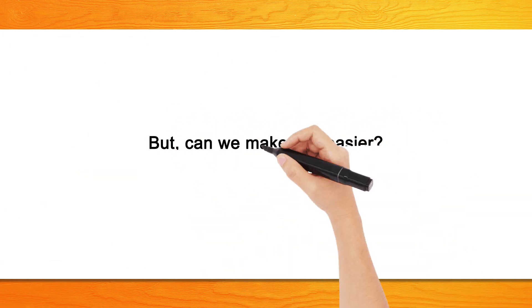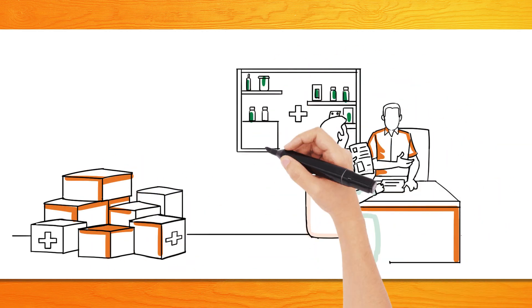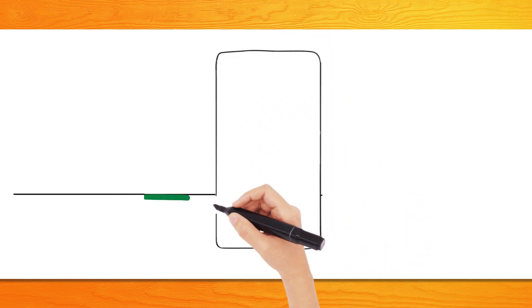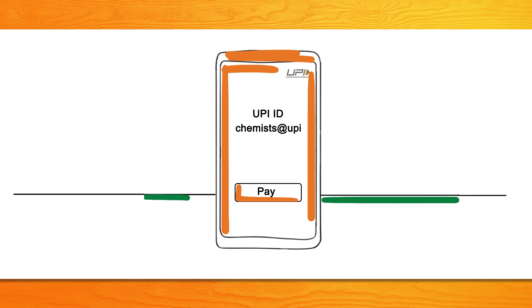But can we make this easier? Yes, we can. The bank representative approaches the distributor with a UPI solution to collect payments. It creates chemist UPI IDs for the distributor with multi-agent functionality.